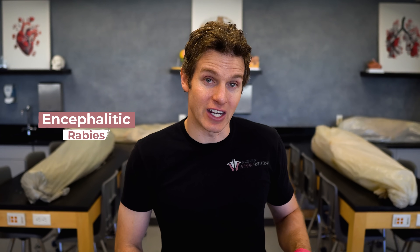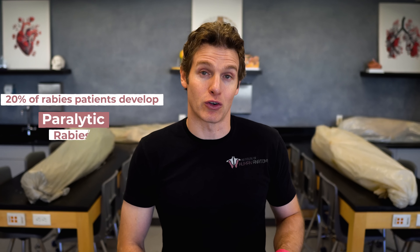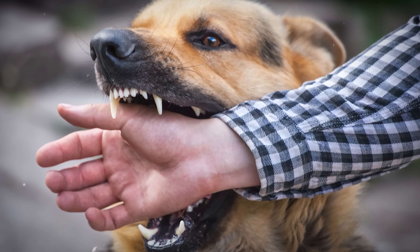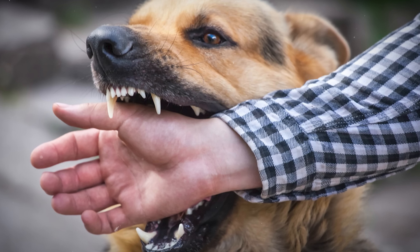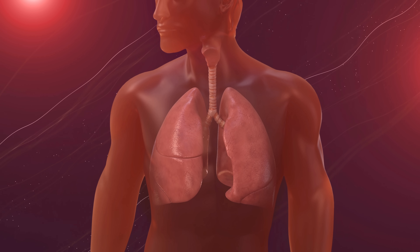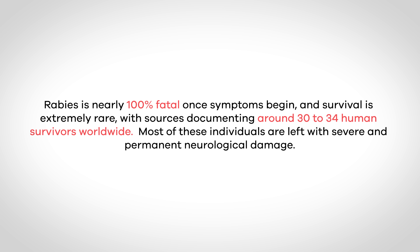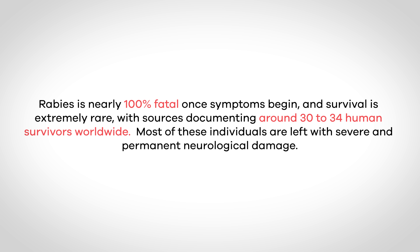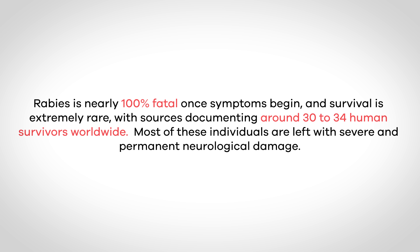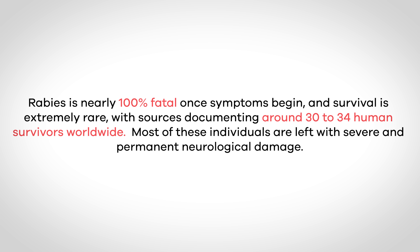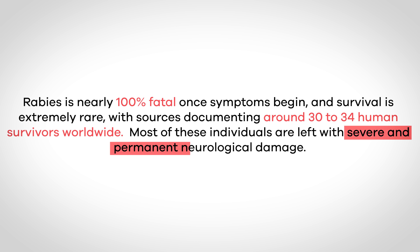All of the symptoms just mentioned were encephalitic rabies, but about 20% of rabies patients develop paralytic rabies. These patients tend not to have many of the symptoms described above; instead they have ascending paralysis from the bite location and typically die due to paralysis of the respiratory muscles. As you can see, this is a pretty horrific disease, and it almost always leads to death with only about 30 to 34 documented survivors worldwide, most of whom are left with severe neurological damage.